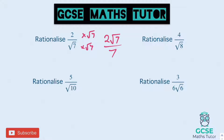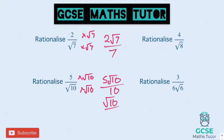For the next one, times the top and bottom by root ten, and you end up with five root ten over ten. There's no hint in these questions, but you might have spotted that the top and bottom both divide by five. So dividing the top by five gives root ten, and the bottom by five gives two. As a side note, that fraction was already rationalised at the previous step — but it does actually simplify down, which is always worth looking out for.